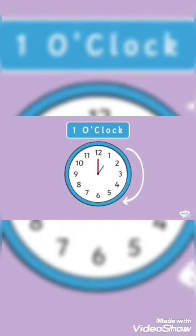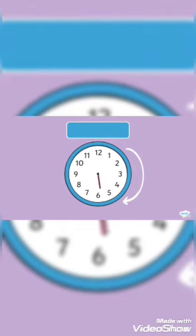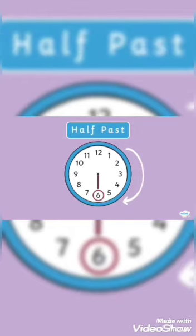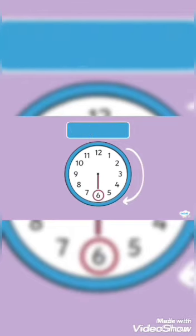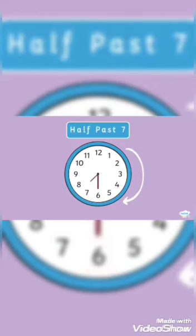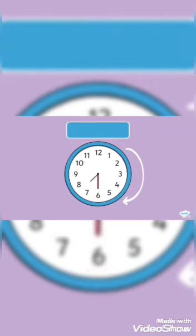But when the minute hand, the bigger hand, gets to the number 6, then we say half past. You can see that when the minute hand is pointing to the 6 and the hour hand is pointing to the number 7, we say the time is half past 7.